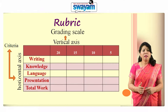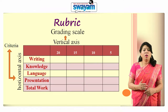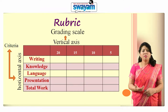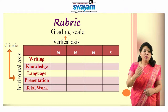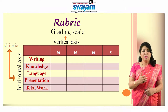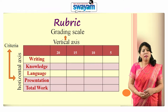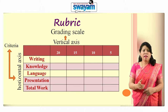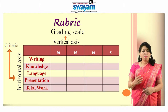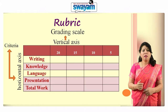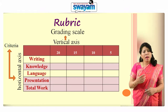Rubrics are typically displayed in the form of a grid. The left-hand column of the grid lists the objectives being evaluated. In the horizontal axis, criteria are written and in the vertical axis, grading scales are given. The cells in each row describe specific criteria for receiving a low, medium, or high score.